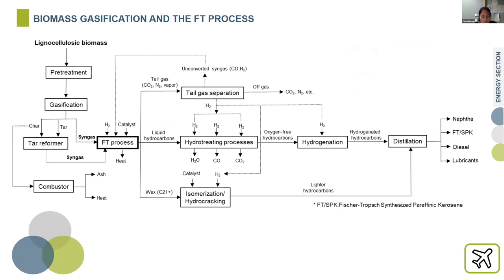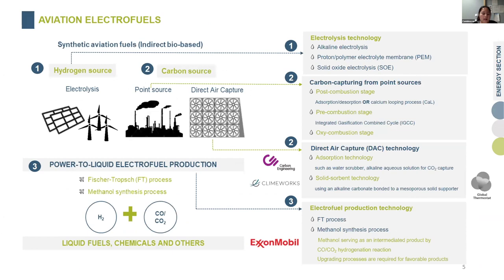Here is an example of the process flowsheet of the biomass gasification and Fischer-Tropsch pathway that we created based on literature reviews, patents, and technical reports. Apart from biofuels, aviation electrofuels can be produced from renewable sources like water and carbon dioxide from the atmosphere, or from non-renewable sources like waste gas, sometimes known as synthetic fuels.